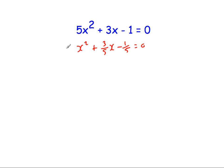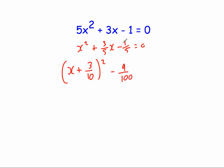The benefit of this is you've got the x squared as a 1x squared, and it's easier to do completing the square whenever it's an x squared on its own at the front. So we write x plus half of 3 fifths — well half of 3 fifths is 3 tenths — close bracket squared. Then we subtract that term squared, so that's 9 over 100, and then put on our minus 1 fifth, and that equals 0.